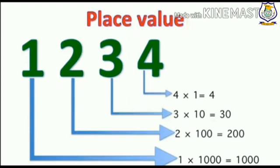Can you tell me the place value of 3 here? I bet you can. The place value of 3 is 30. Similarly, the place value of 2 is 200 and the place value of 1 is 1000.